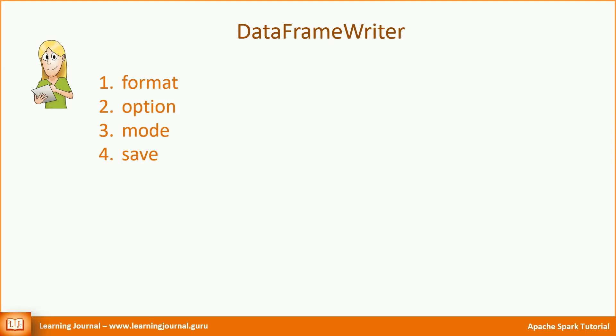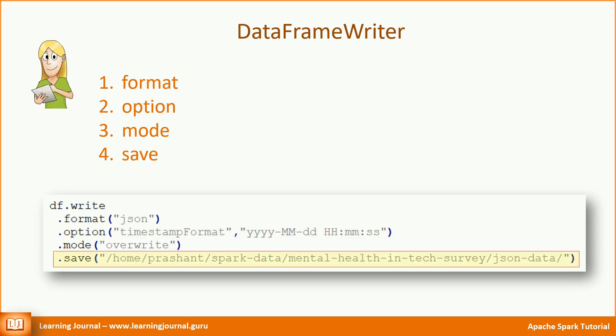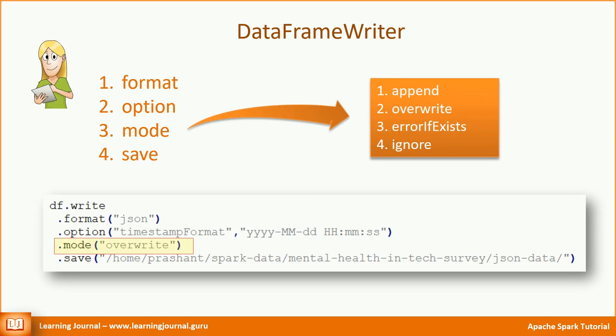The concept of writing data back to the source system is fundamentally the same as reading data. You need a writer and hence we have a DataFrame Writer interface. For a typical writer, there are four methods: Format, Option, Mode, and Save. The Format method and the Option method work like the DataFrame Reader — you need to check the documentation for the available options. The Save method is like the Load method: it takes the output path name and dumps the data at the specified location. However, while working with a file-based destination, you may encounter a file-already-exists situation. To handle that scenario, you have a Mode method that takes one of the following options: Append, Overwrite, Error If Exists, and Ignore.